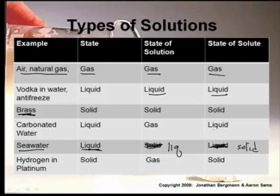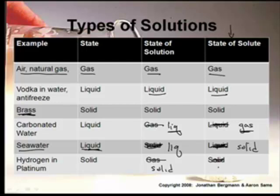Carbonated water has a gas dissolved in a liquid - the gas is the solute and the liquid is the solvent. So for a carbonated beverage, the gas is dissolved in the liquid. And hydrogen in platinum would be gas dissolved in a solid. So you can have a solution that is a solid, liquid, or gas, and what's dissolved can also be a solid, liquid, or gas.